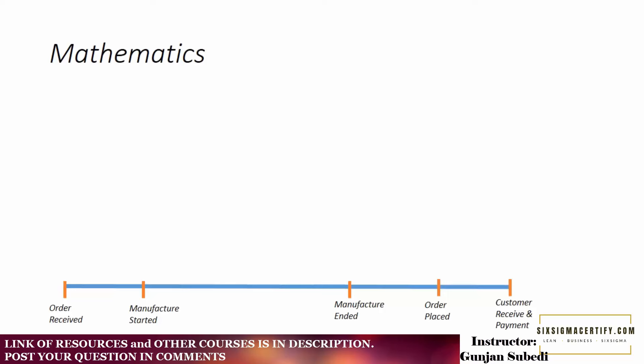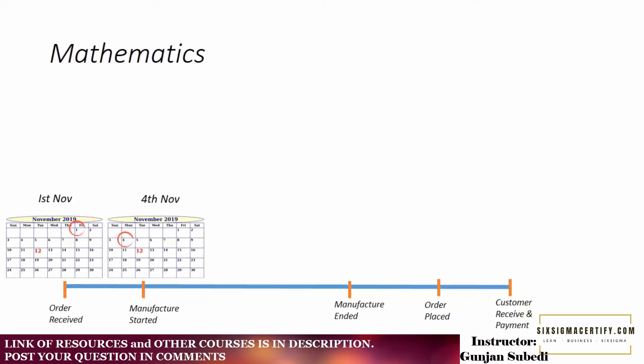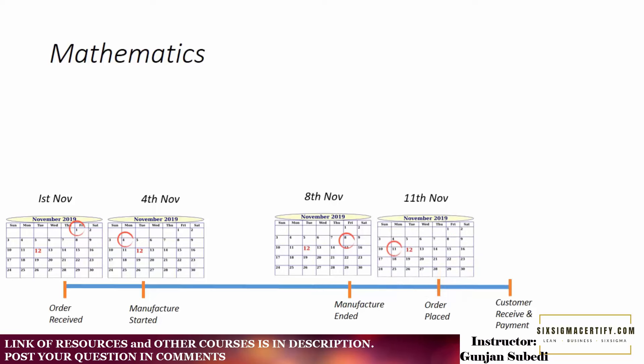So what's the mathematics? The mathematics is fairly simple. Suppose you receive an order from the customer for a certain product on the 1st November. Your manufacturing started from the 4th November and by 8th November the manufacturing was completed. You placed the order to get to the customers on the 11th November and by the 12th November your customers received product and you received the payment. So what's the lead time? It's about 12 days as we can see from the figure here. The lead time is 12 days.